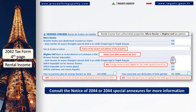Moving on to the fourth page of the 2042 tax form, you can use section 4 to declare any rental income from unfurnished properties. Consult the notice of 2044 or 2044 special annexures for more information.